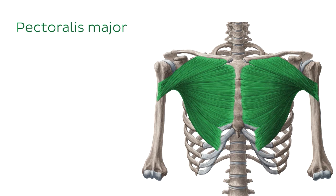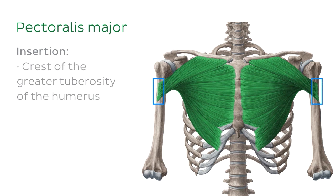Although this muscle has three points of origin, its fibers come together onto one insertion point — at the crest of the greater tuberosity of the humerus. Because of the different courses of its muscle fibers, the pectoralis major has a recess at its point of insertion that is open at the top in order to prevent the muscle from overstretching. You can see this little recess outlined in dark gray here.